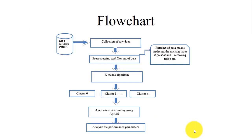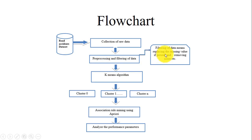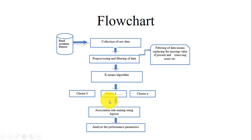The overall project flowchart is as follows: first, collect road accident data, which is available from various government accident-related sites. Then pre-process the data to filter out missing values or noise. After that, apply the k-means algorithm to create clusters — cluster 0, 1, up to n, where n is the number of clusters you specify. This clustered data is then provided to association rule mining to generate rules using the apriori algorithm. Finally, the performance parameters for both algorithms are analyzed.